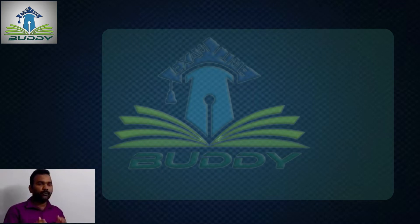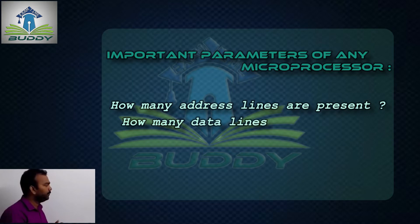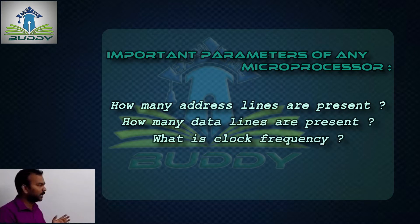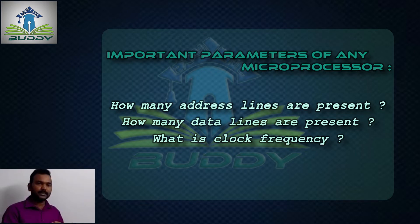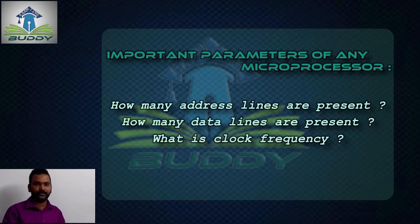Now we will see the important parameters of any microprocessor. The following are the important parameters: how many address lines does it have, how many data lines does it have, and what is the operating frequency, that is, the clock frequency.